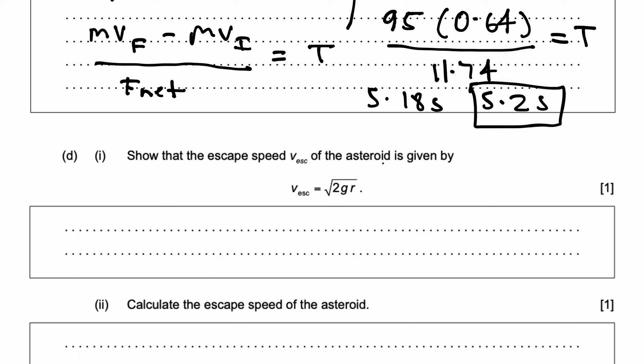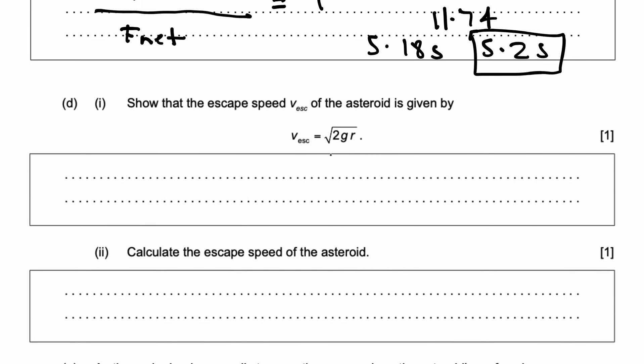Part D. Show that the escape speed, v escape, of the asteroid is given by this equation right there. So, what is escape speed? It's in our data booklet. Escape speed is nothing but root of 2GM/r. Now, think about it. GM/r. Does something look similar? Because we know, of course, the middle term has to be g.